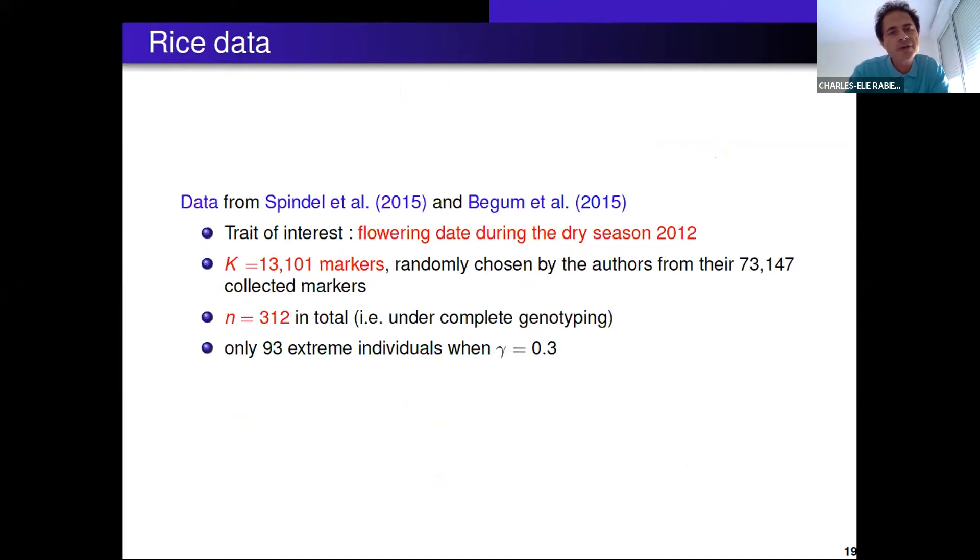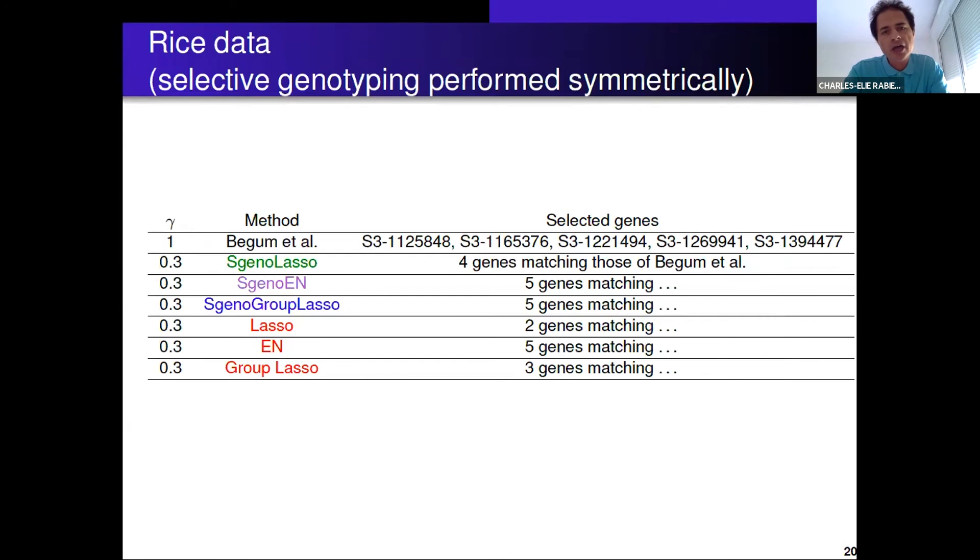An example on rice real data. We took the data from Spindel et al. and Begum. The trait of interest was the flowering date during the dry season 2012 and we had 13,000 markers. We kept only 93 individuals and we removed the full genotyping data and kept only the extreme data. We performed a selection of 30 percent.